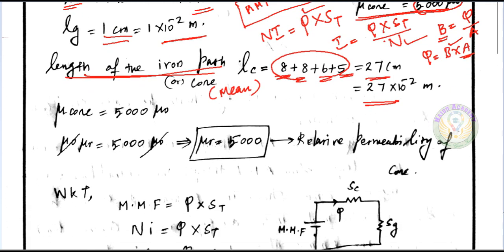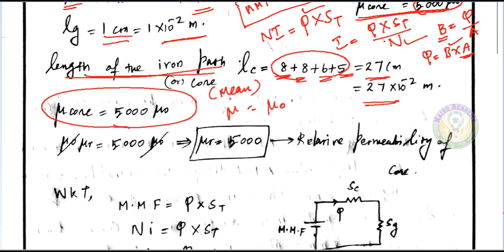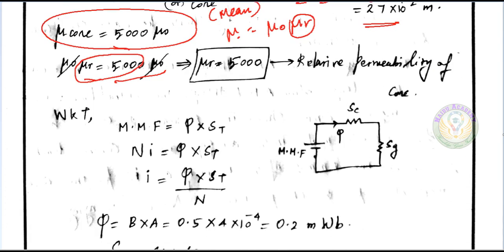The relative permeability of the core mu_r is given. We know mu = mu_0 × mu_r. The mu_r value is 5000. Substituting the mu value: mu = 5000 × mu_0. The total reluctance S_total = Sc + Sg. The core reluctance Sc uses the core mean length and mu_r = 5000, while the air gap reluctance Sg uses mu_r = 1.